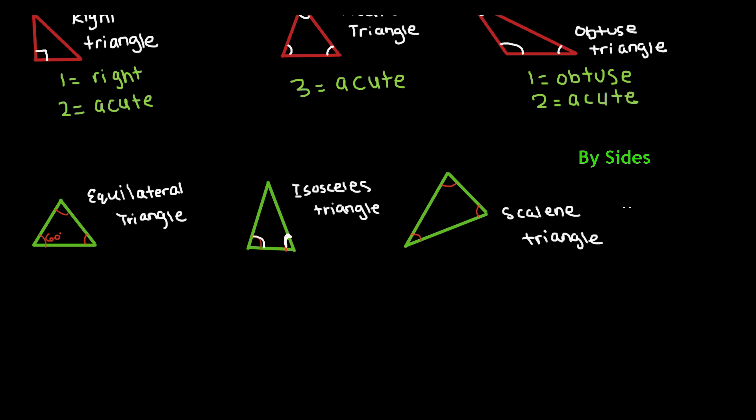And now the second category is based off of the length of the sides. First, we have an equilateral triangle. Now just from looking at the name, equilateral is pretty much the same thing as equal. So what this is telling us is that all of the sides in this triangle are the exact same. So all three sides are the same. And if you look at it, looking at it from angles, it has three acute angles.